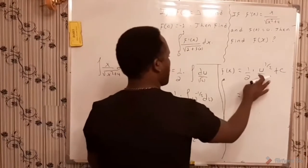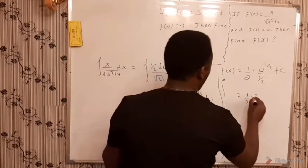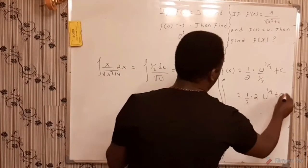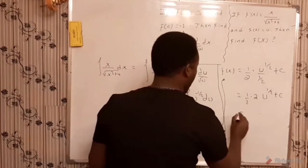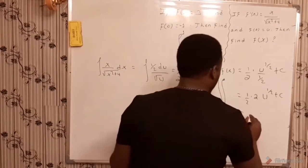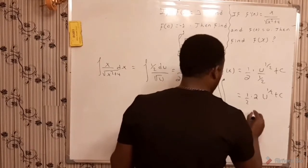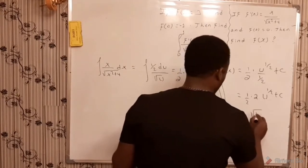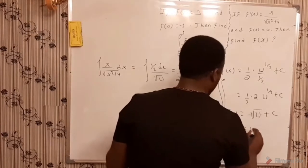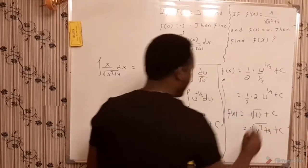Since u equals x squared plus 4, back-substituting gives f of x equals the square root of x squared plus 4, plus c.